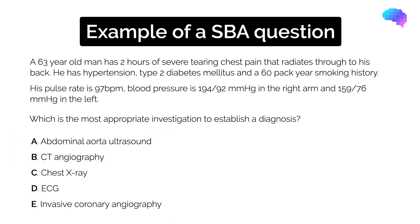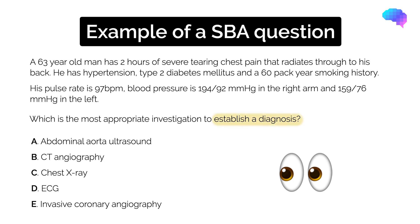You can see how the incorrect options are trying to distract you from the best answer. For example, option C, chest x-ray, seems like a reasonable investigation for a man with chest pain. Option D, an ECG, is also a very reasonable investigation for chest pain. However, if we read the question again, we are being asked which is the most appropriate investigation to establish a diagnosis. Neither a chest x-ray nor an ECG is diagnostic for aortic dissection, so the best answer is option B.